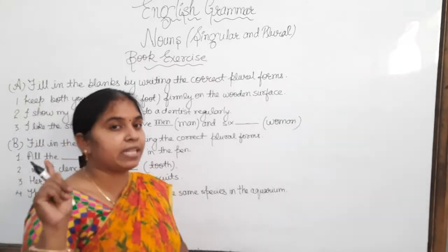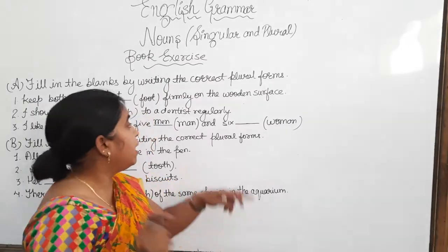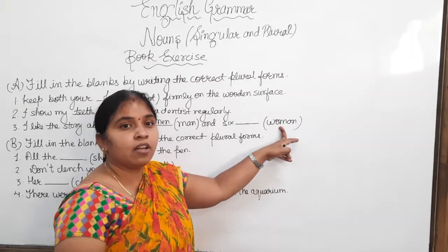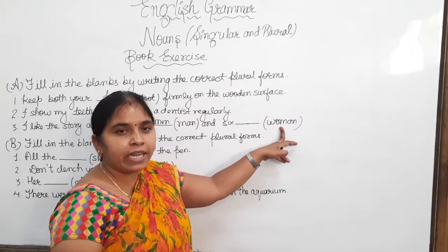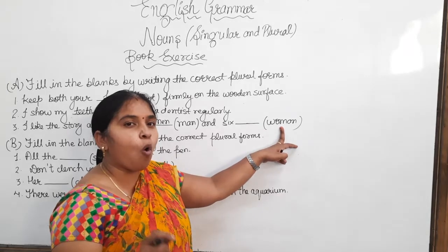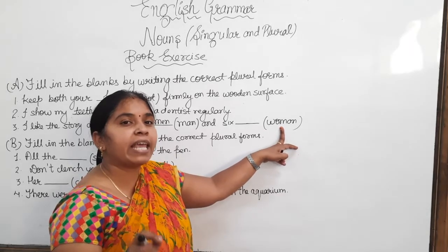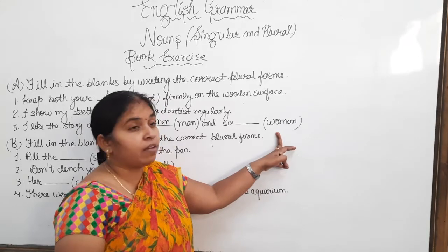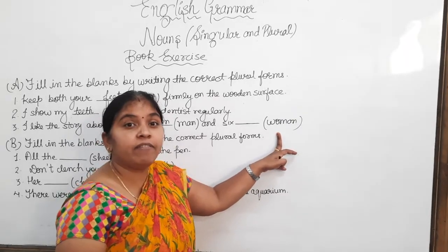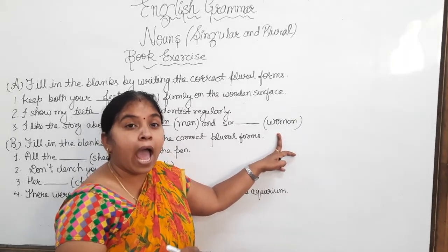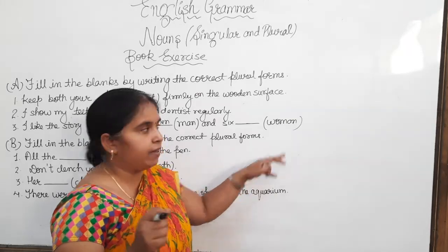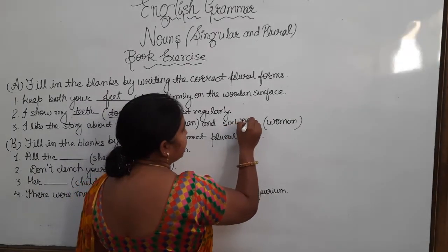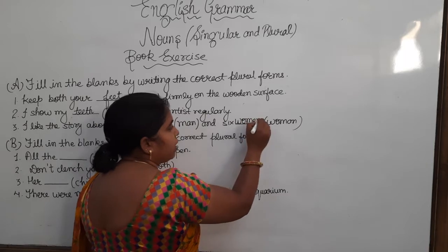And for the second blank, the word in the bracket is 'woman' — W-O-M-A-N — which is singular. The plural of this singular noun is 'women' — W-O-M-E-N. So this plural noun will come in the blank.